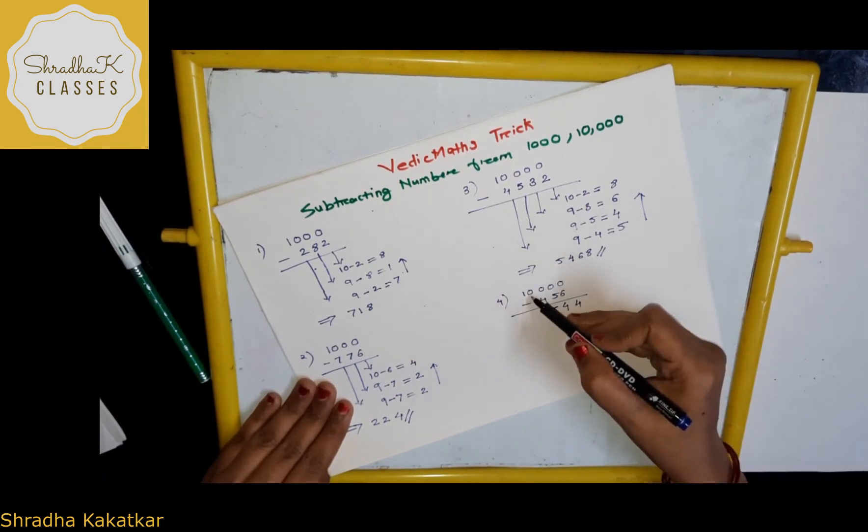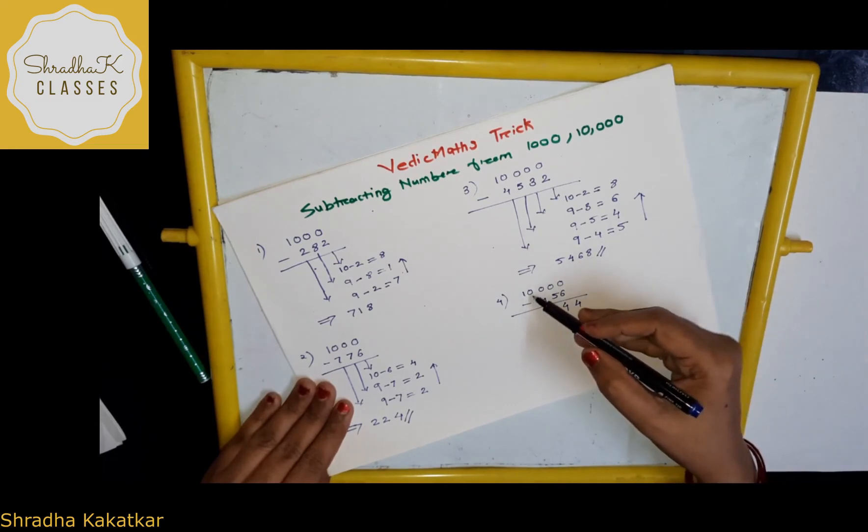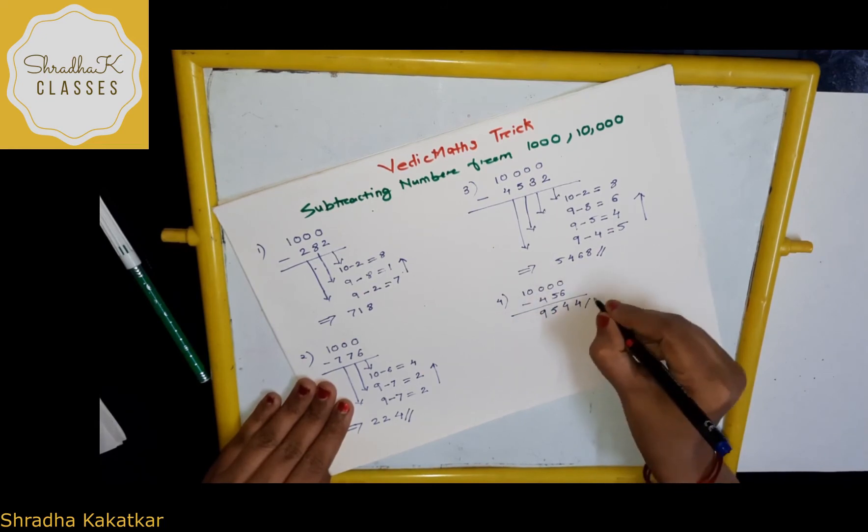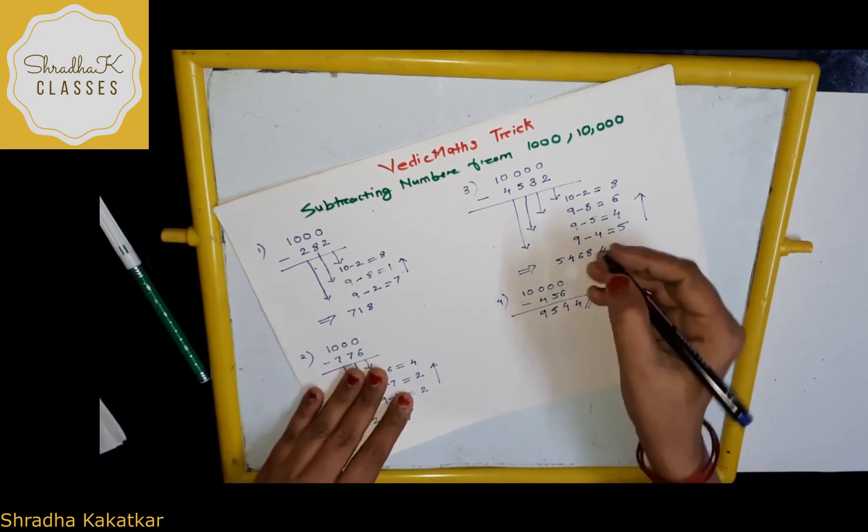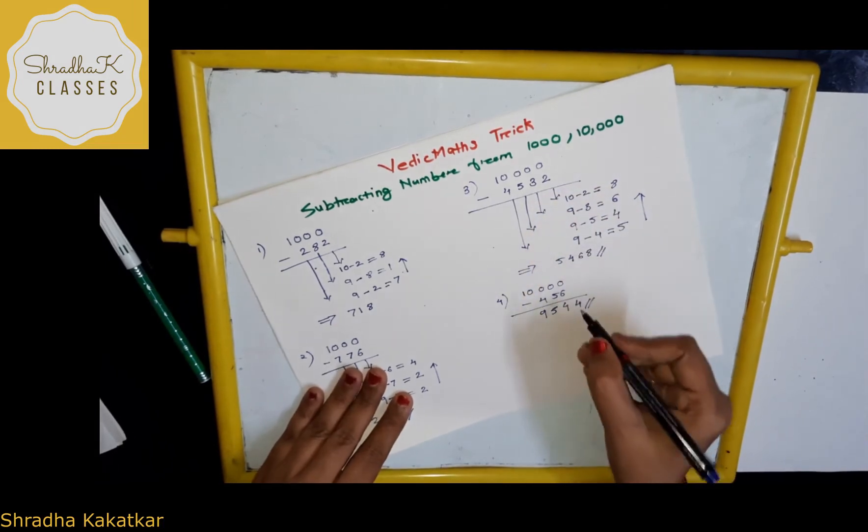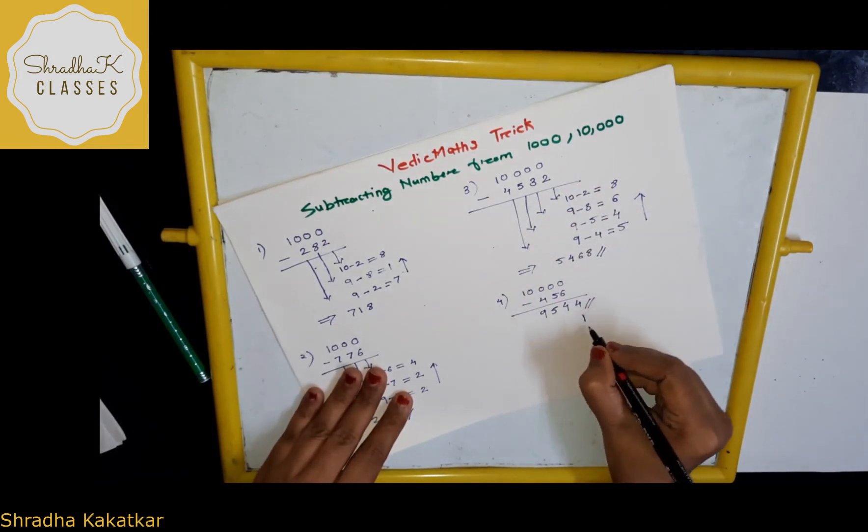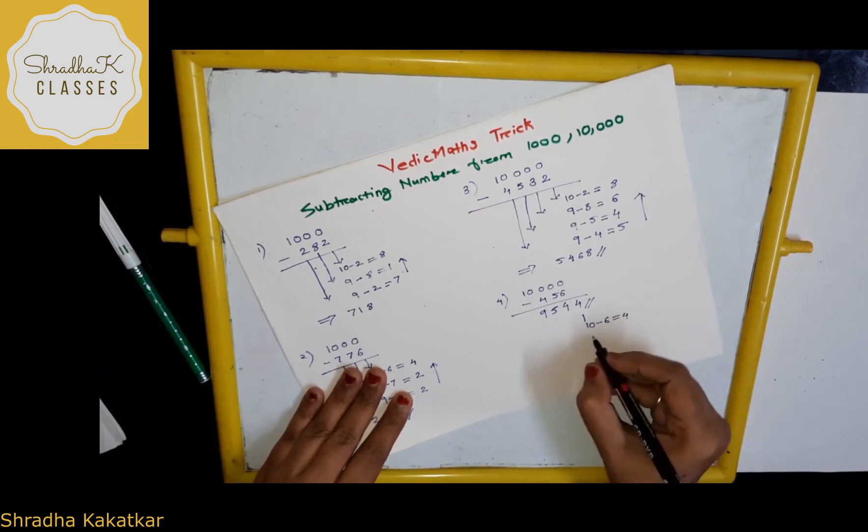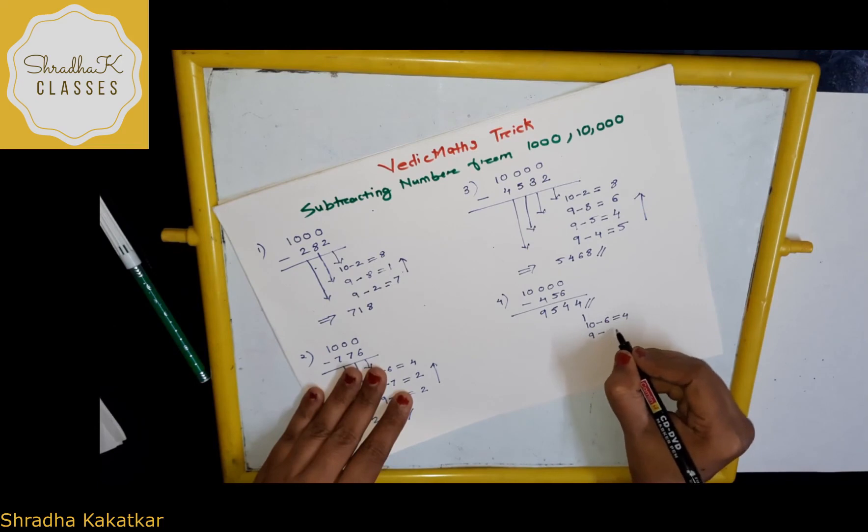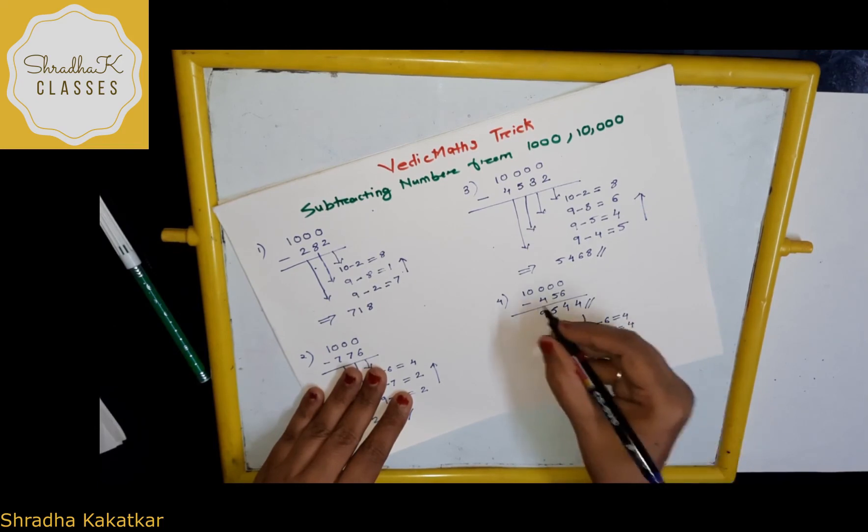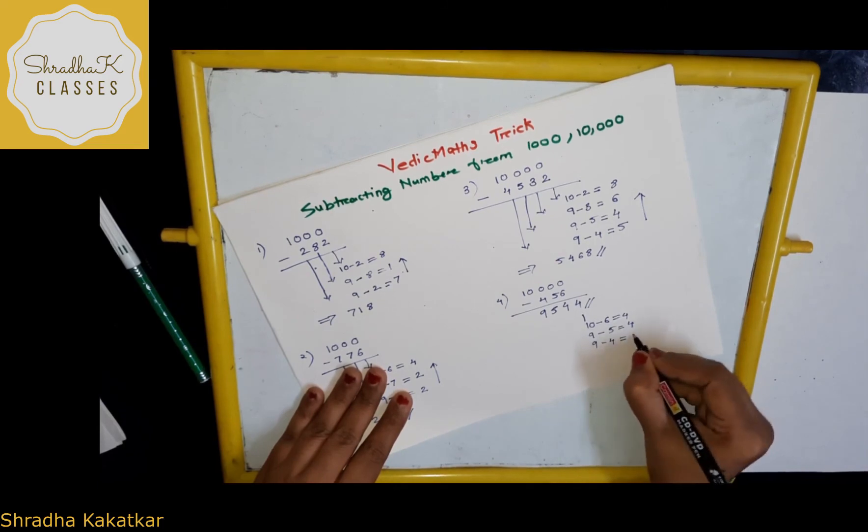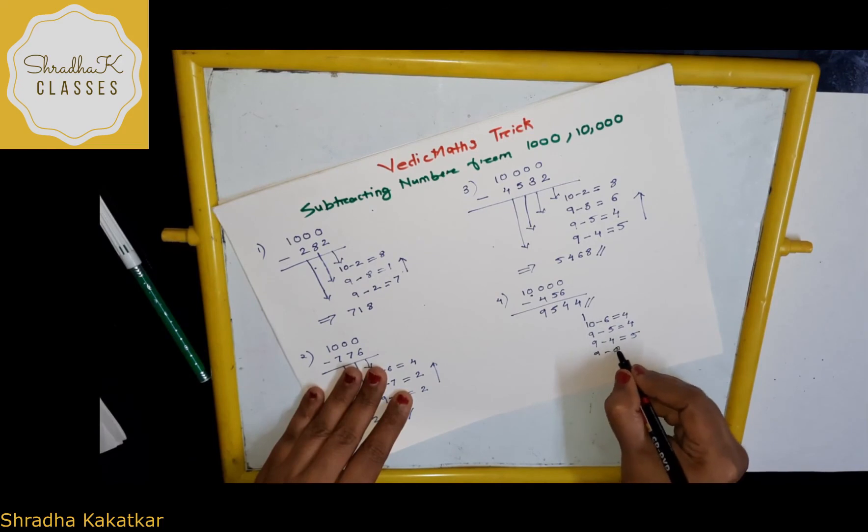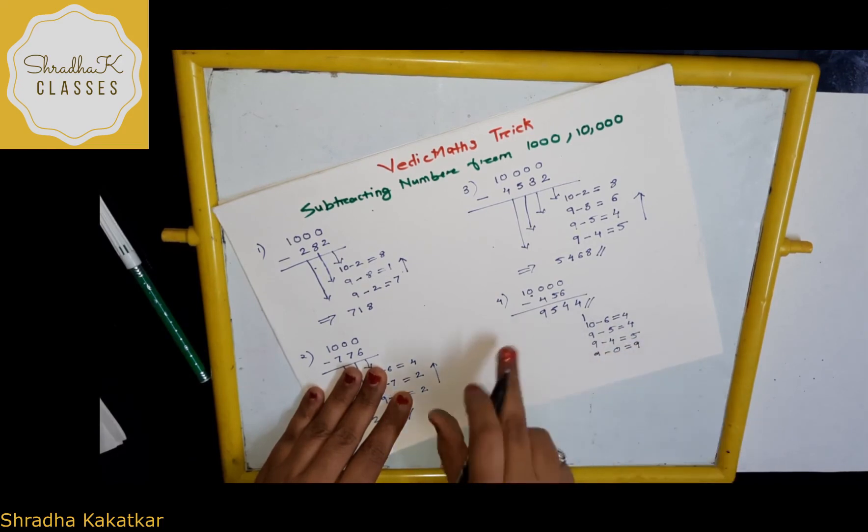Again, there is number, right? Here, 0 is there, no? So, again, you have to do, 9 minus 0. How much? 9. So, this is your answer. What I have done? Again, I will just write like this for you. First I did, 10 minus 6, that is 4, then 9 minus 5, which is 4 again, then 9 minus 4, which is 5, and then what is here? 0. So, 9 minus 0 is what? 9. This was a bit tricky, right?